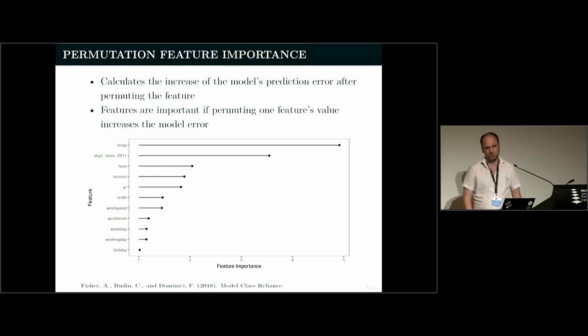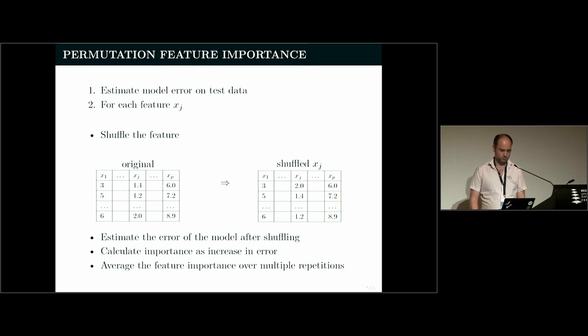Permutation feature importance is what most of you probably already know from the random forest importance metrics. The idea is to compute an error estimate, a generalization error on the original dataset and the original model. And then for an importance score for each individual feature, you basically just shuffle that feature a couple of times, compute the increase in error or the drop in performance, and you average this across many permutation iterations. This is very similar to a permutation test.